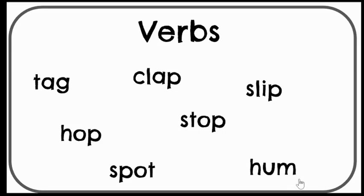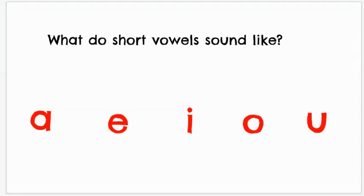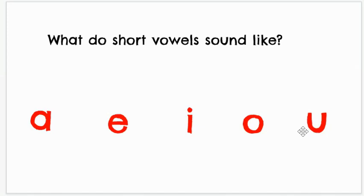I think these verbs have a short vowel sound. Your vowels are shown in red. Short A sounds like 'ah', short E says 'eh', short I says 'ih', short O says 'ah', and short U says 'uh'. You will hear those short vowel sounds in our verbs.